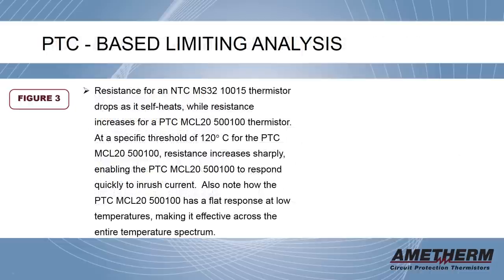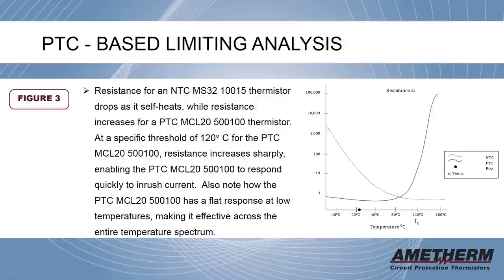Let's take a further look at PTC-based limiting. Referring to the graph to the right, resistance for an NTC MS3210015 thermistor drops as it self-heats, while resistance increases for a PTC MCL20500100 thermistor. At a specific threshold of 120 degrees Celsius for the PTC MCL20500100, resistance increases sharply, enabling the PTC MCL20500100 to respond quickly to inrush current. Also note how the PTC MCL20500100 has a flat rate response at low temperatures, making it effective across the entire temperature spectrum.